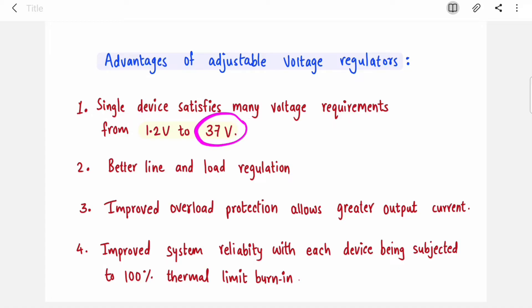This maximum voltage depends on your IC. There are some ICs within the LM317 series which provide more than this, up to 57 volts. It depends on the version of your IC. Also, better line and load regulation, improved overload protection, and improved system reliability make adjustable voltage regulators way better than fixed ones.